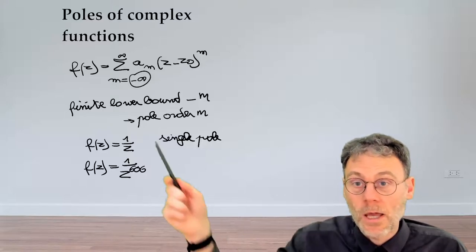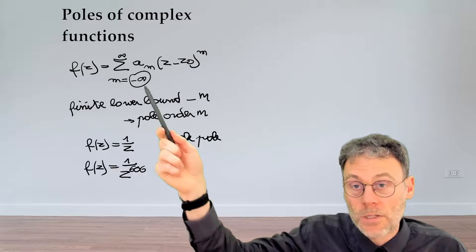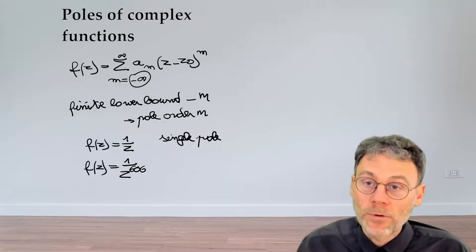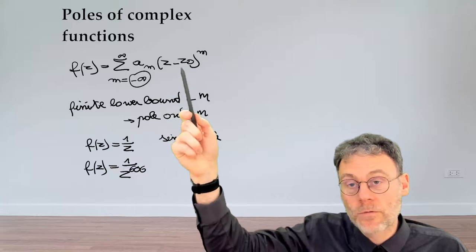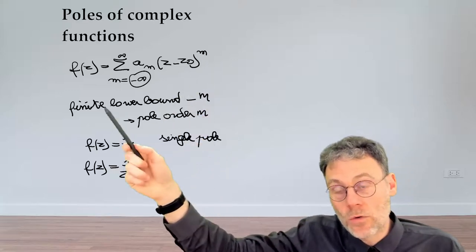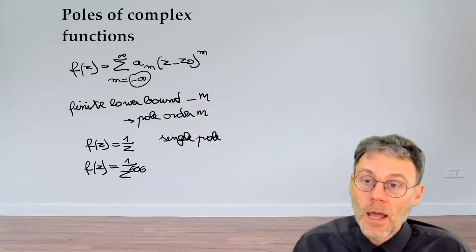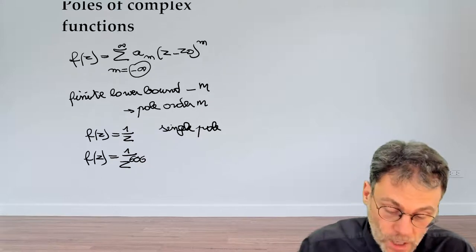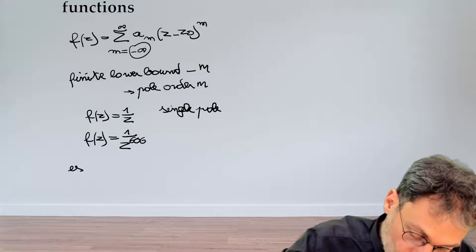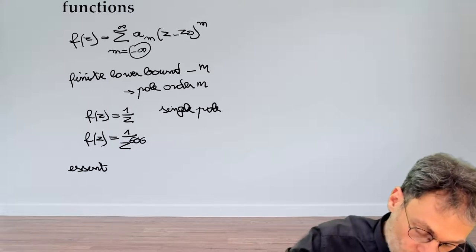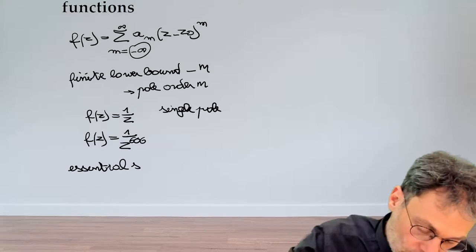So far, so boring. This was the case for finite lower bounds here in the summation. What happens if there's no finite lower bound, but if the negative powers of z minus z0 go all the way to minus infinity? In that case, we're not talking about a pole of a certain order. We're talking about an essential singularity. So if that's the case, you have an essential singularity.